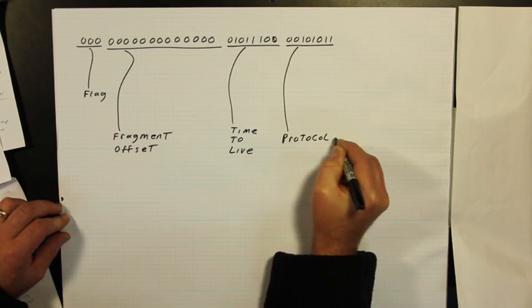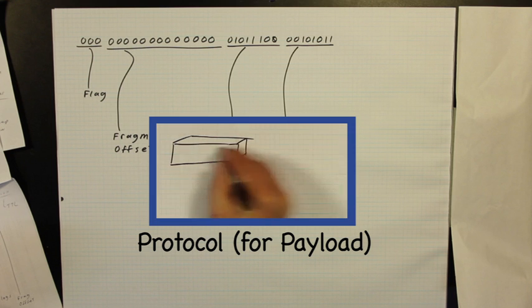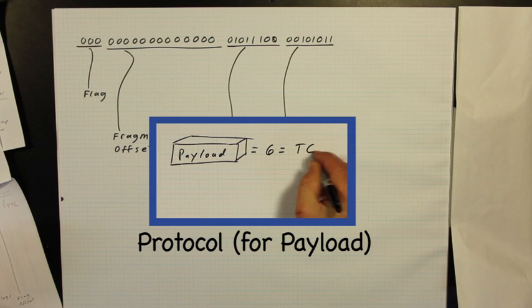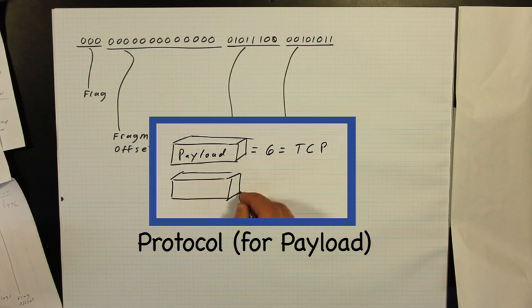The protocol 8-bits are used to identify the protocol that is used with the payload of this packet. The most usual values are 6 for TCP or 17 for UDP.